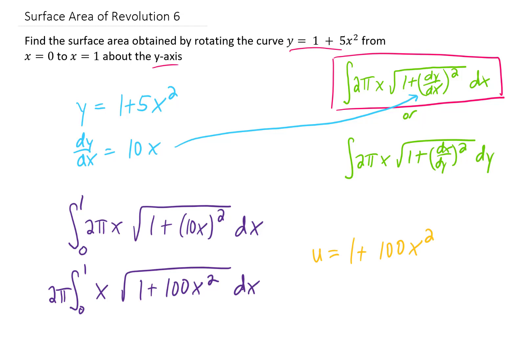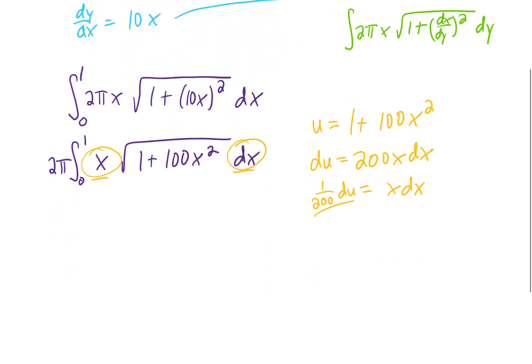If we set u equal to 1 plus 100x squared, our du is going to be 200x dx. You'll notice that we have an x and a dx in this problem, and a small amount of algebra tells us that x combined with dx can be replaced with 1 over 200 du. Let's do that and see what this integral turns into.